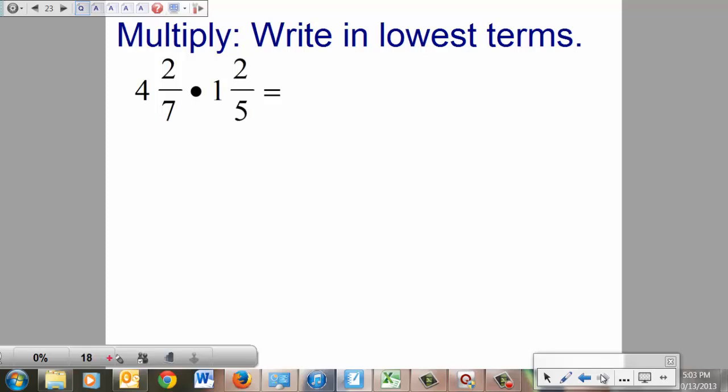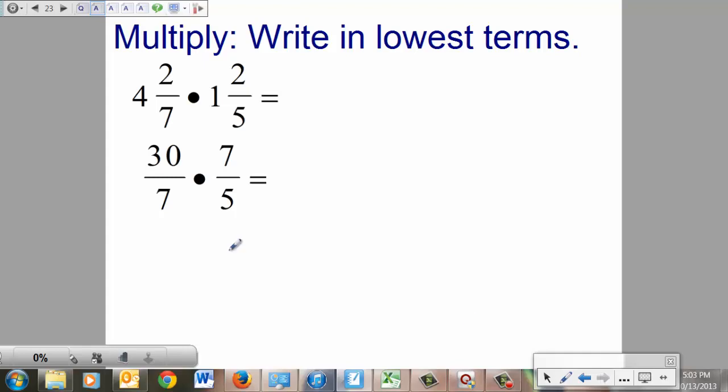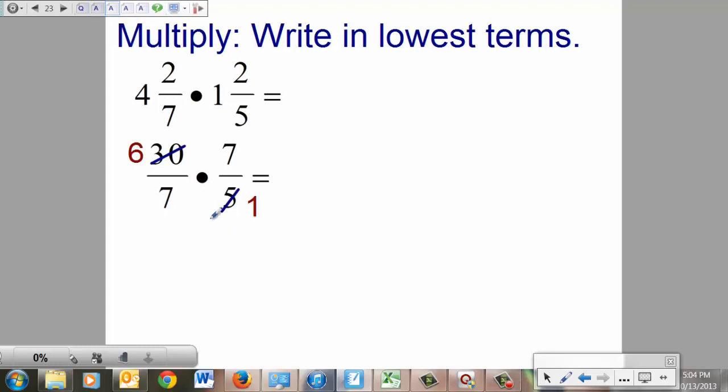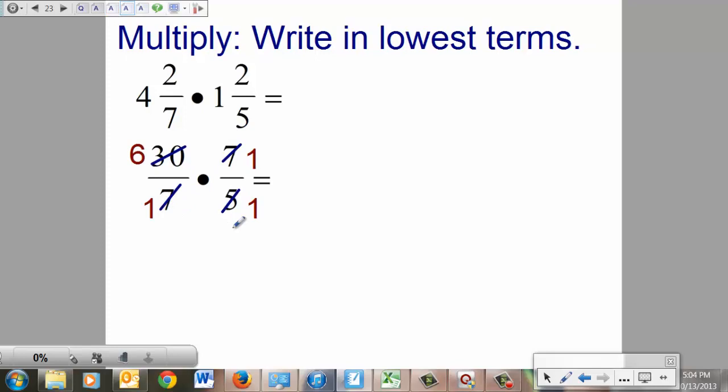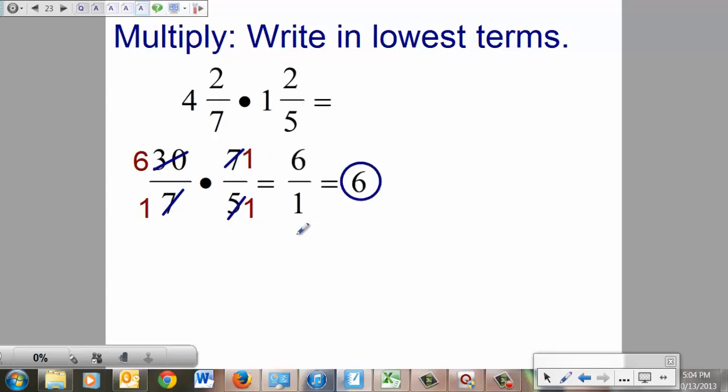Here's another shiny little problem. Two mixed numbers. You've got to change them both to improper fractions. We did that by 7 times 4 is 28, plus 2 is 30. 5 times 1 is 5, plus 2 is 7. Now we're going to simplify. The 5 goes into 5 once, 5 goes into 30 six times. And these 7s are going to knock each other out to become 1s. When they do that, you get 6 over 1, otherwise known as 6. Easy math.